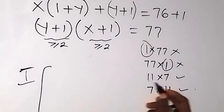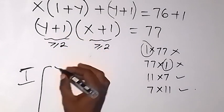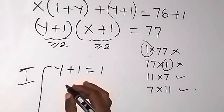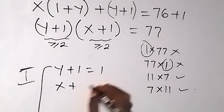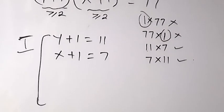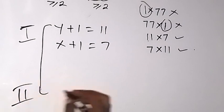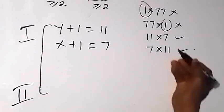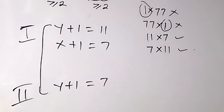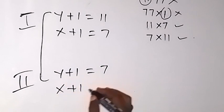We have two cases. For Case 1, we equate y plus 1 equals 11 and x plus 1 equals 7. For Case 2, we equate y plus 1 equals 7 and x plus 1 equals 11.